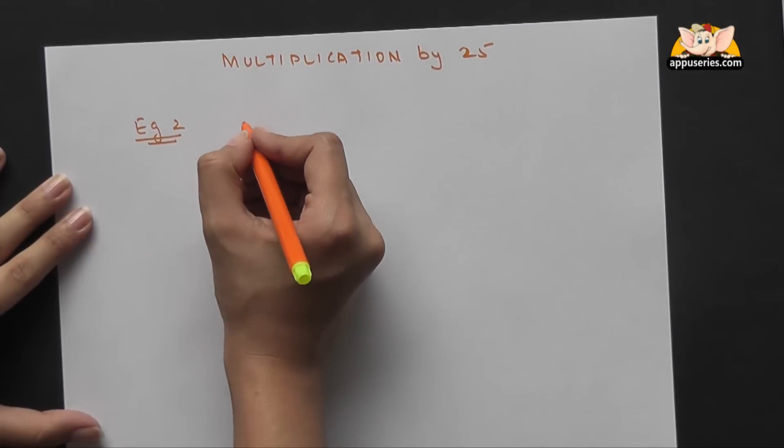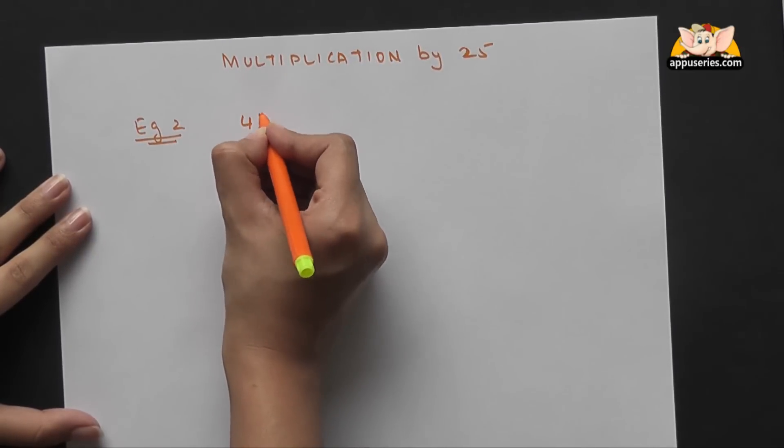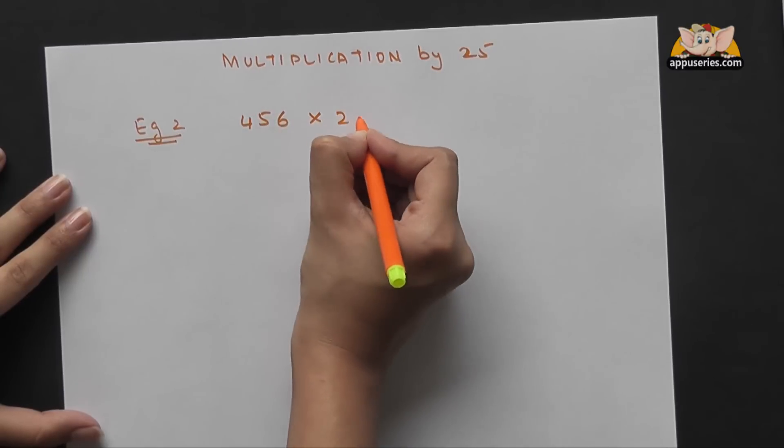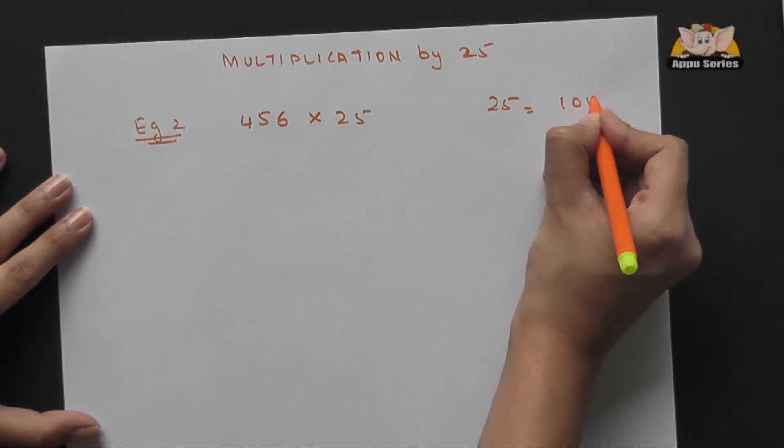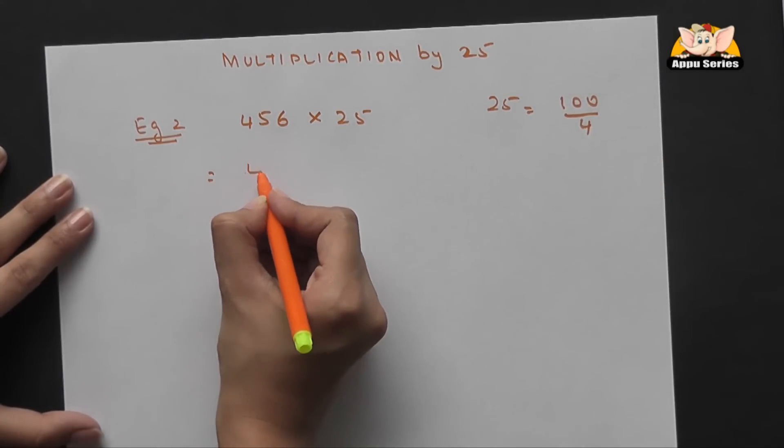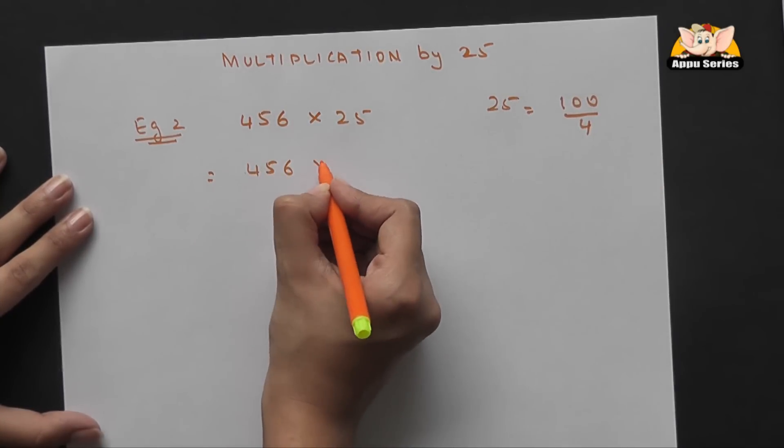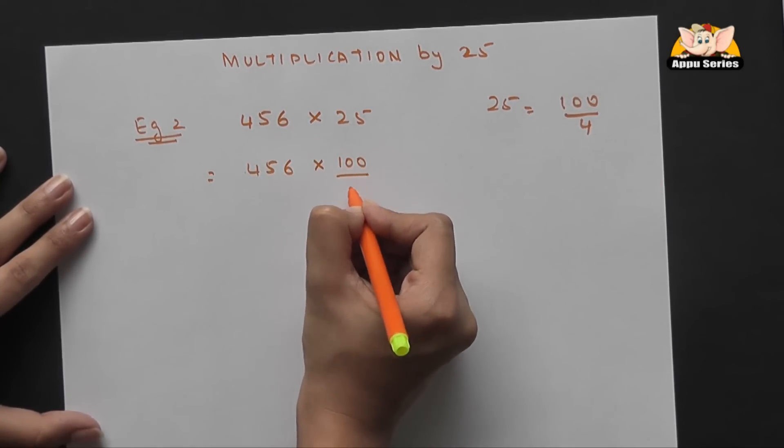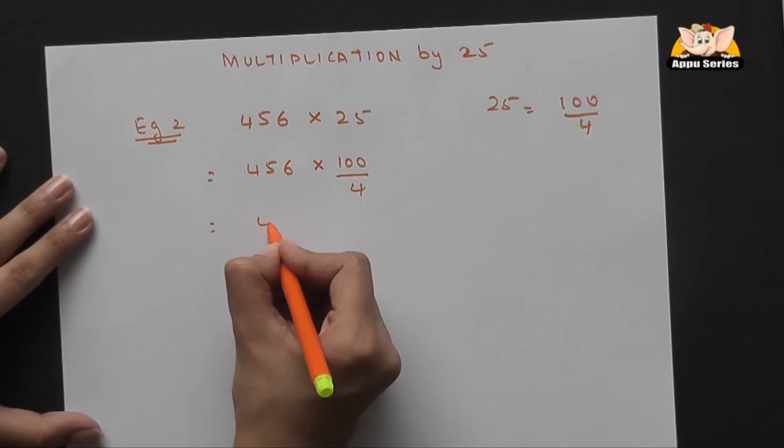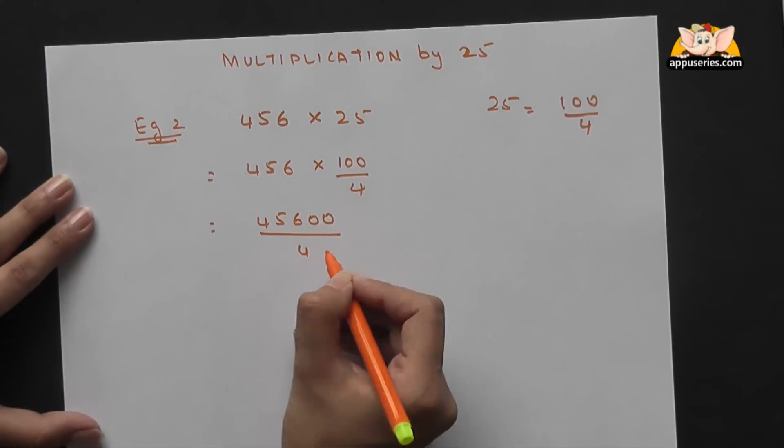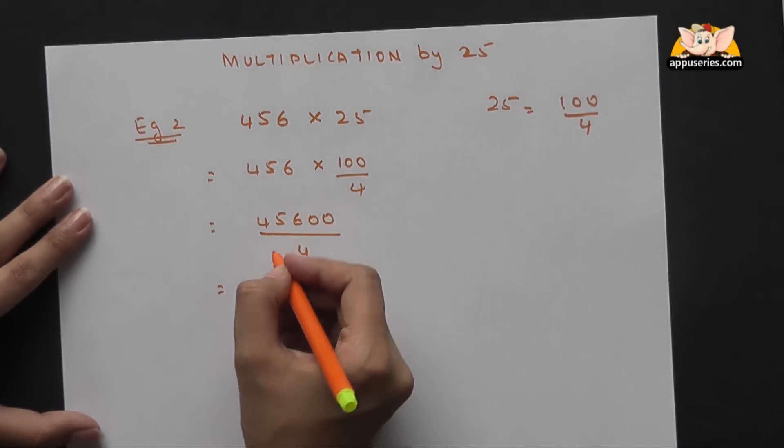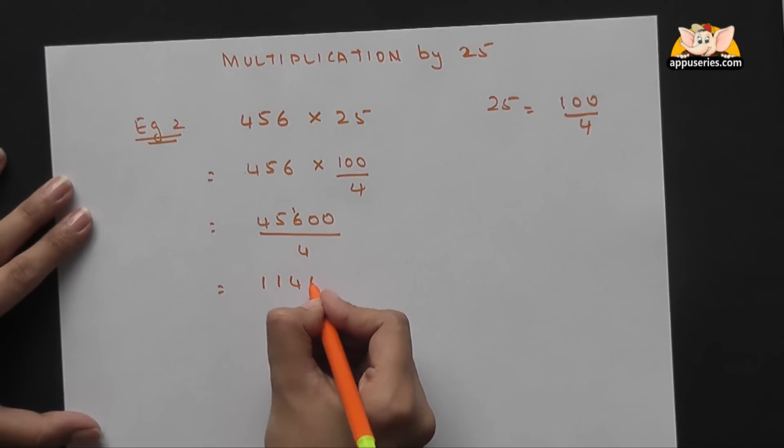We will take a bigger number like 456 into 25. Substitute 25 with 100 by 4. We get 456 into 100 by 4, which is 45600 by 4. Now it's simple division by 4, and your answer is 11400.